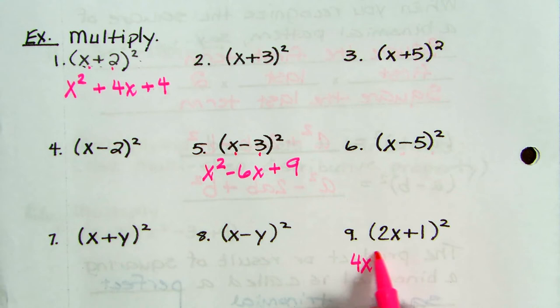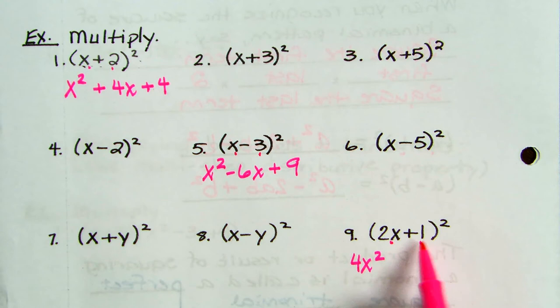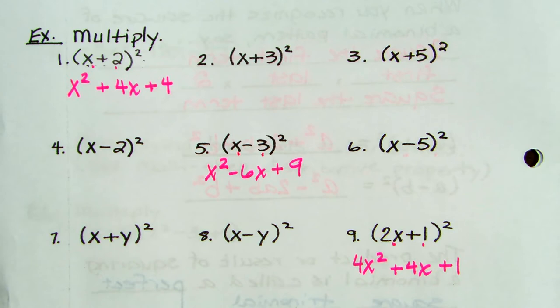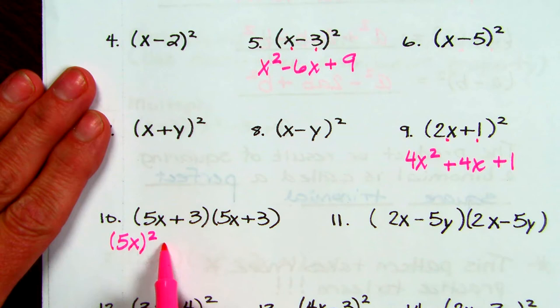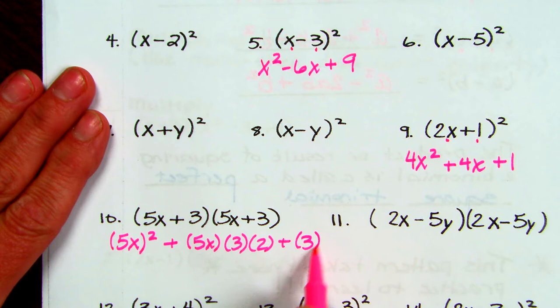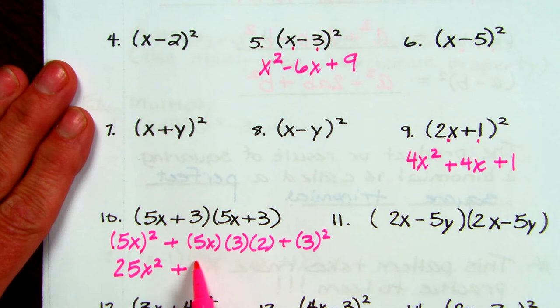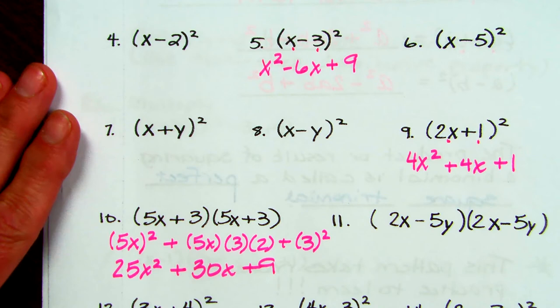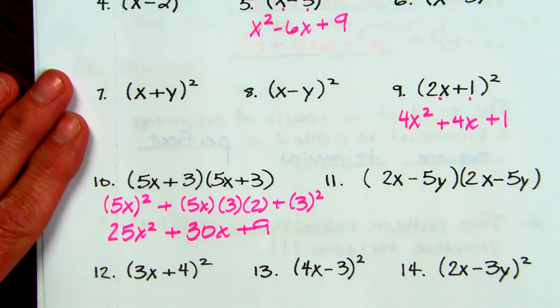If you have 2X plus 1 squared, you square the first term — which means you square the coefficient 2 as well. Then first times last: 2X times 1 times 2 gives 4X. Then square the last term. It's still a little shorter than doing the distributive property or FOIL. What I'd really like is for you to be able to look at it and say to yourself what you need to do.